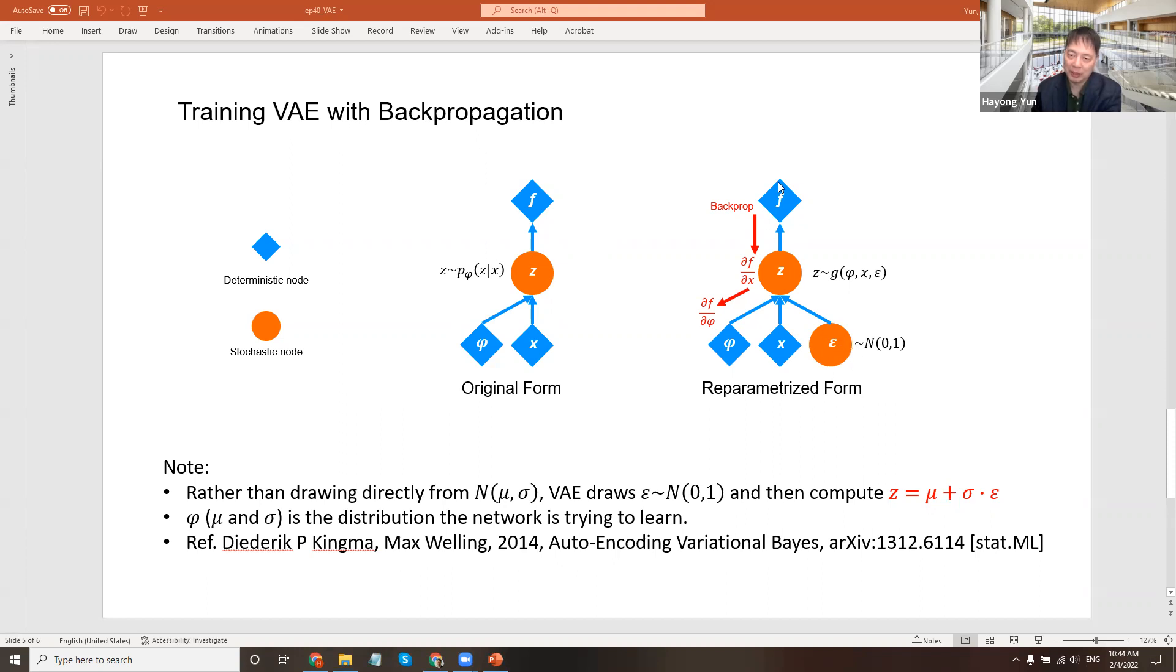What we're backpropagating is we have a z here and the z goes back to the x and phi here like this. How do we do this? If you have a random normal distribution, we can just have a value of mu and sigma and multiply the sigma by this random normal distribution and add the mean of it and get the z.